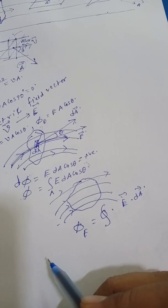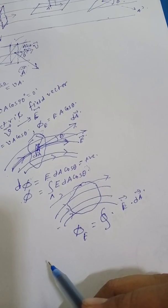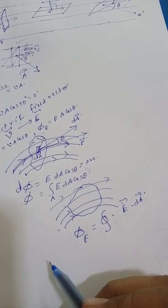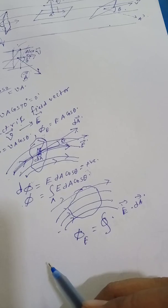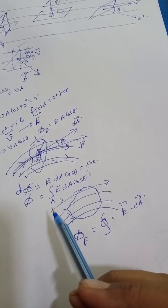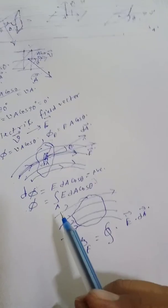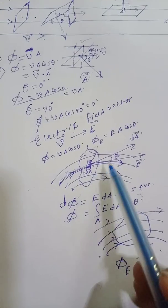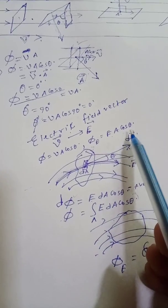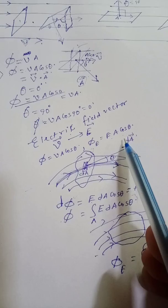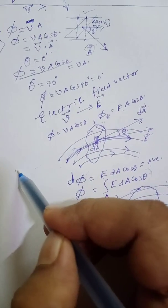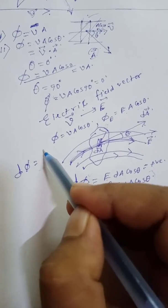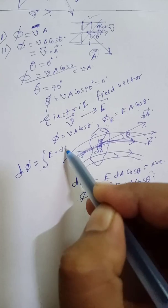Let us now consider the plane surface of area A placed in the uniform electric field E. The normal to the surface makes an angle theta with the direction of the field. By the definition of electric flux through the surface, flux is equal to E A cos theta. If it is elementary flux, then it should be written as d phi, and d phi is equal to E dot dA, where dA is the elementary area.